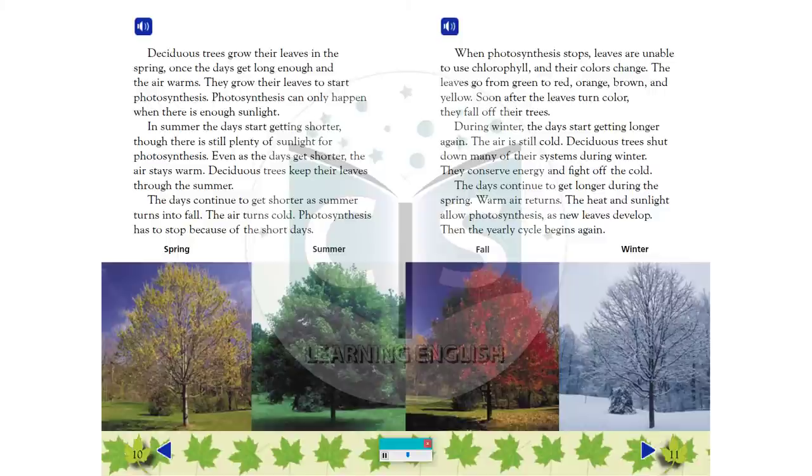During winter, the days start getting longer again. The air is still cold. Deciduous trees shut down many of their systems during winter. They conserve energy and fight off the cold. The days continue to get longer during the spring. Warm air returns. The heat and sunlight allow photosynthesis as new leaves develop. Then the yearly cycle begins again.